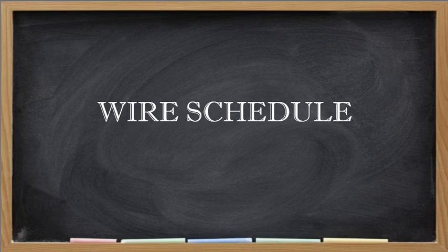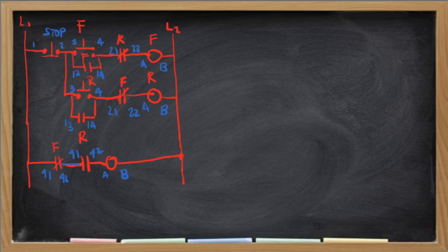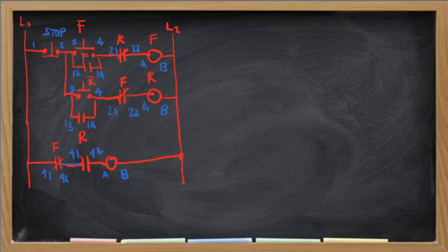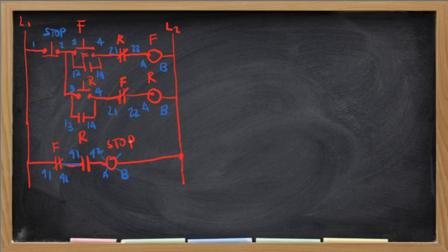We now have here a certain control circuit. This control circuit is for a forward-reverse motor control. As you can see, we have here the terminals, which will indicate the connections of each of these devices or symbols. We have also included a pilot light, which will indicate the status. We could add another layer for the indicator for forward and reverse, but we'll just be focusing on this given control circuit.